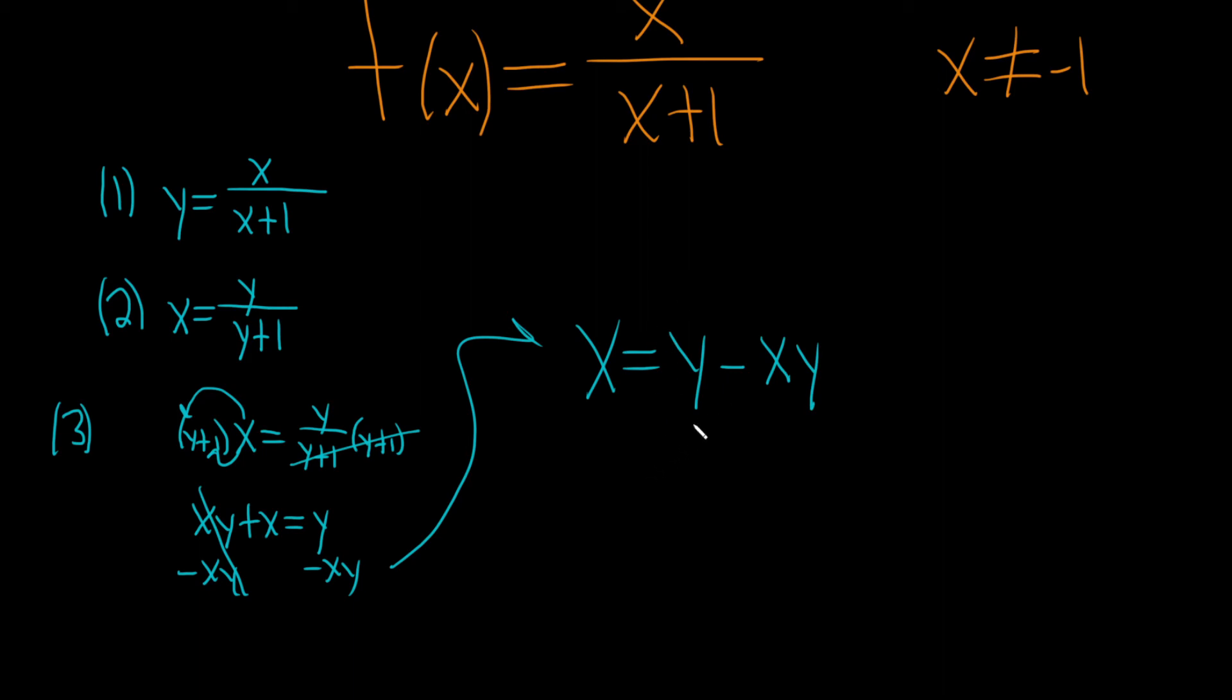We're looking for y, so we can factor it out now. So x equals y times—what times y gives us y? Well, 1. And what times y gives us xy? Well, x. So y is being multiplied by all of this. So to solve for it, we'll just divide by 1 minus x. These cancel, so we get y equals x over 1 minus x.